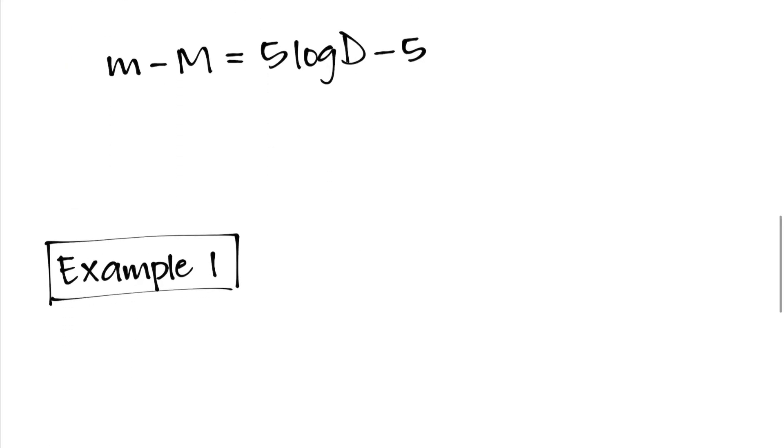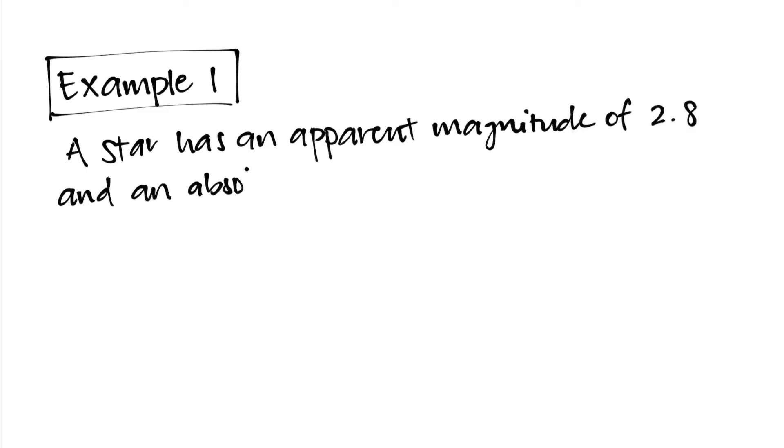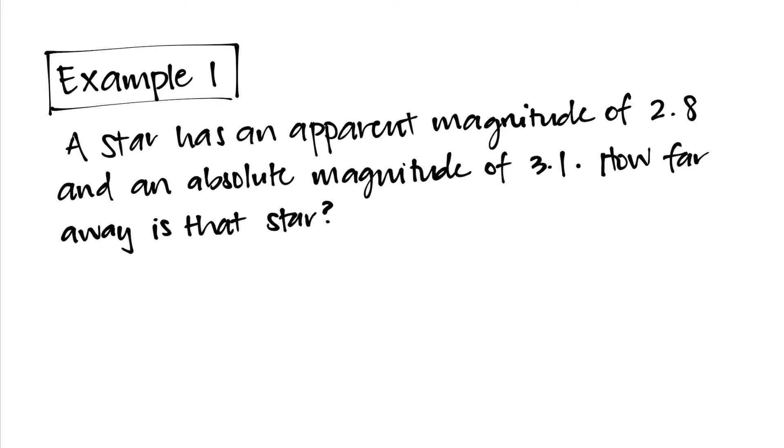So in the first example we are given the following information. A star has an apparent magnitude of 2.8 and an absolute magnitude of 3.1. How far away is that star?